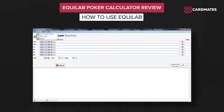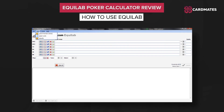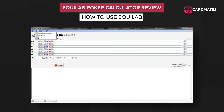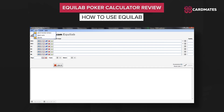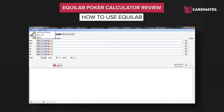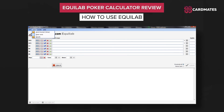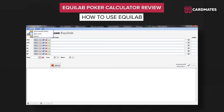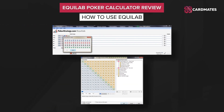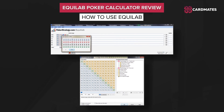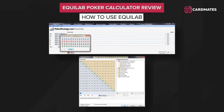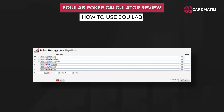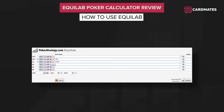How to use Equilab? The functionality of the program is displayed in a single window, where you should specify parameters for calculating the equity. You can choose the table type according to the number of seats — 10-max or 6-max. In order to select 6-max, you should check the short-handed 6-max box in the View tab. You should specify pocket cards for two or more players. You can select both particular cards and a range of hands. By clicking the block button near the two cards, you will select a random range for the player, so the equity will be calculated for two random cards.